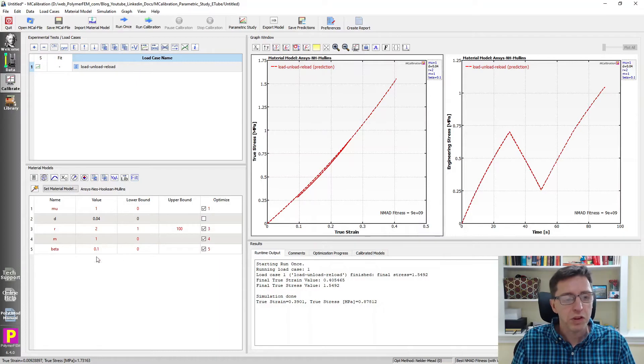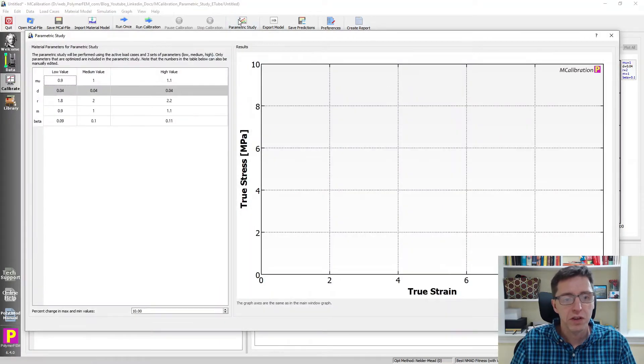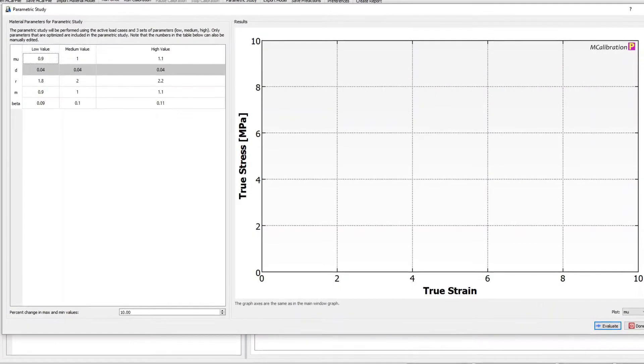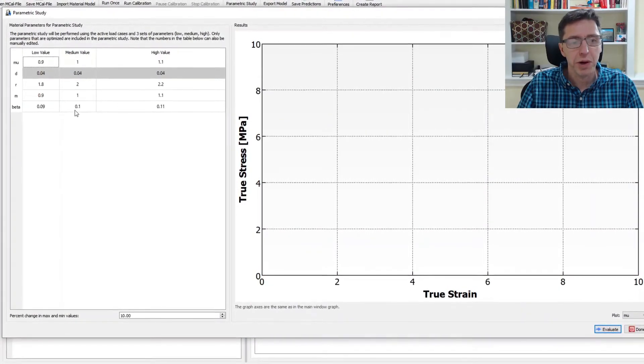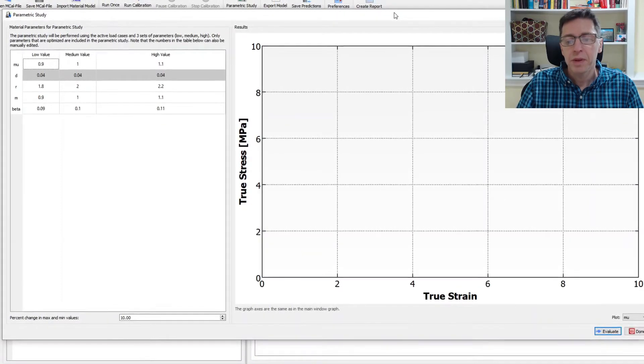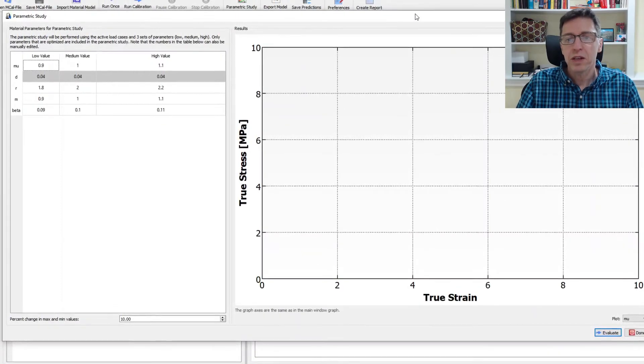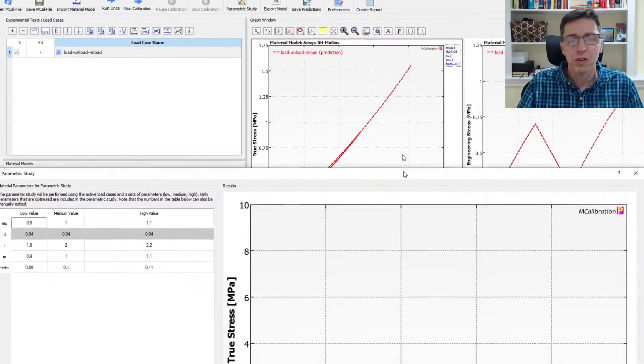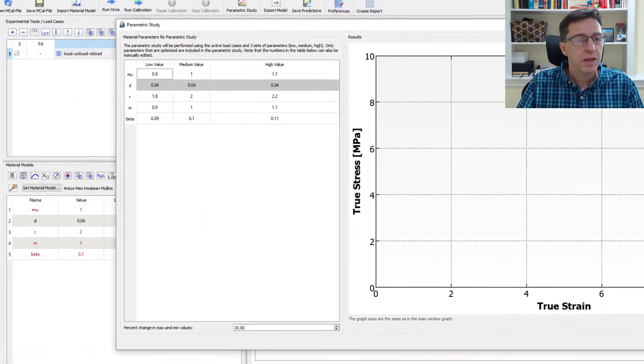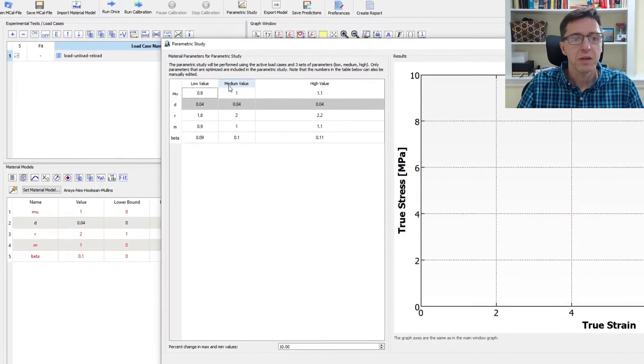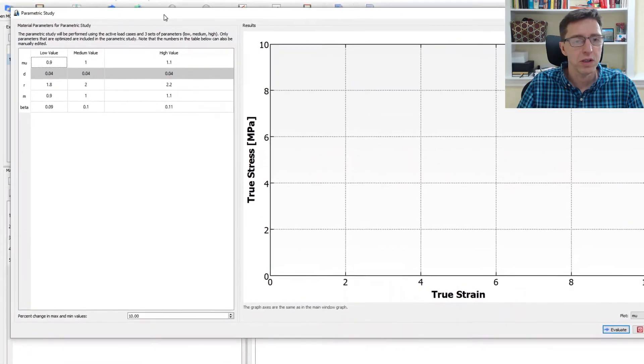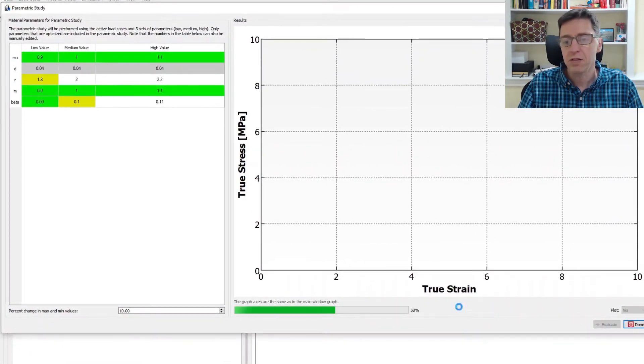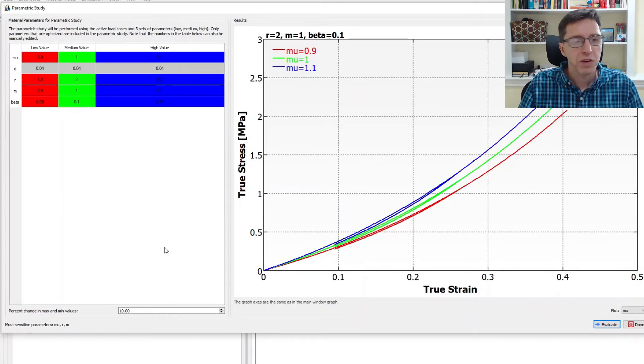Now let's explore what these parameters do. So I'm going to use the parametric study feature in MCalibration. So once I click on that, you'll see that there is a table on the left with a number of parameters and there's a graph on the right. The graph here on the right has the same units and same structure as in the main window. And the parameters in this table in the medium value have the same parameters that we had in the main table in the main window. So click evaluate here. We get a number of different graphs we can look at, and that will help us understand how this works.